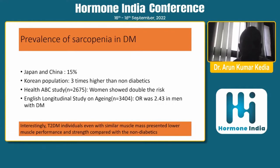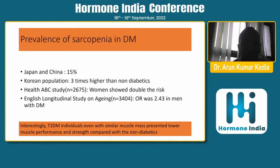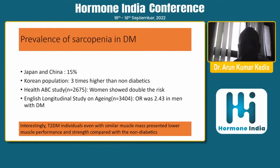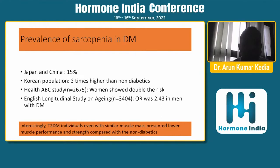Coming to the prevalence of sarcopenia in diabetes: we don't have many studies from India, but studies from Japan and China show that in adults over 60 years with diabetes, prevalence can be as high as 15 to 20%. Studies from the Korean population show a three-times higher chance of sarcopenia and decreased grip strength compared to non-diabetic patients. A study in 2,675 elderly people showed women had double the risk, and the English Longitudinal Study of Ageing found an odds ratio of 2.43 for sarcopenia in men with diabetes.